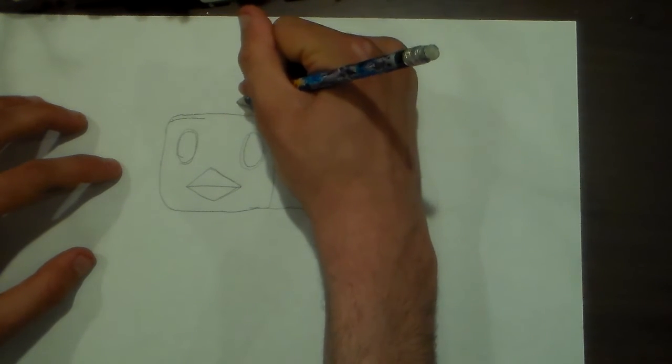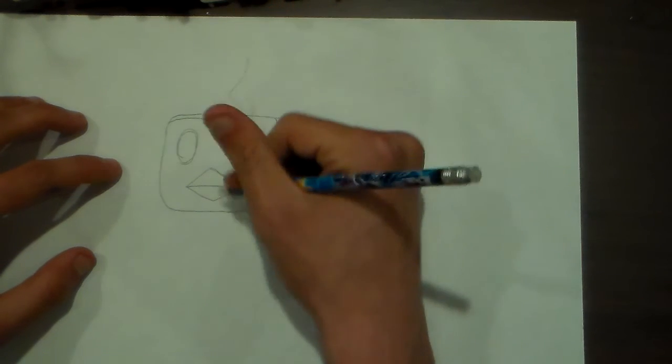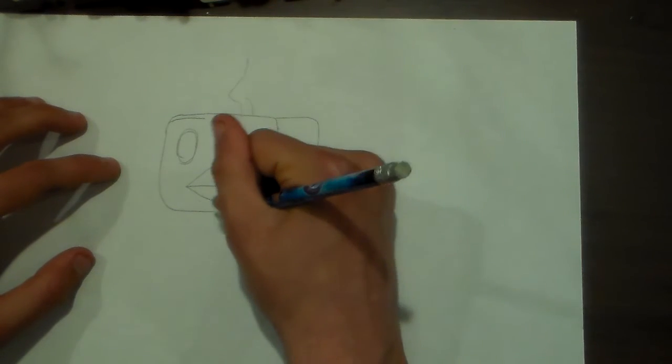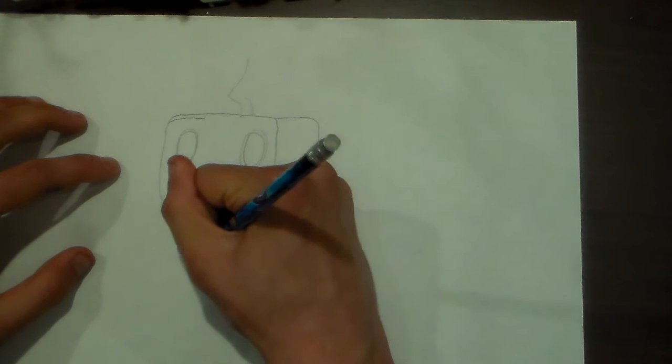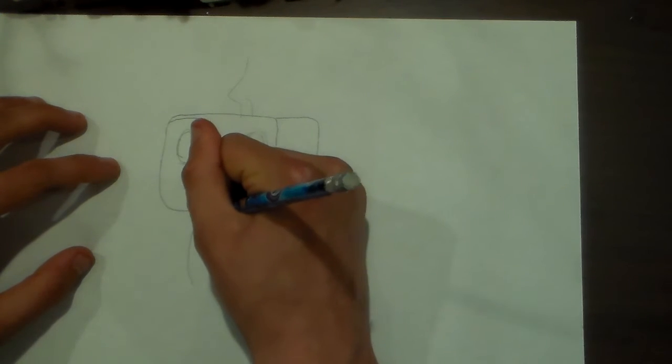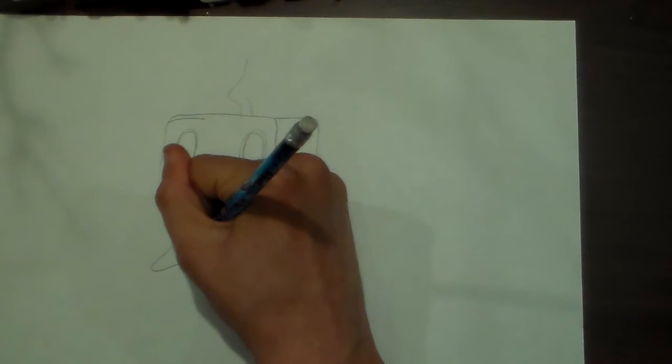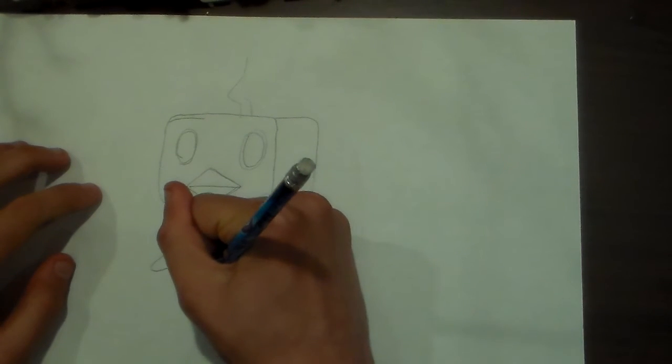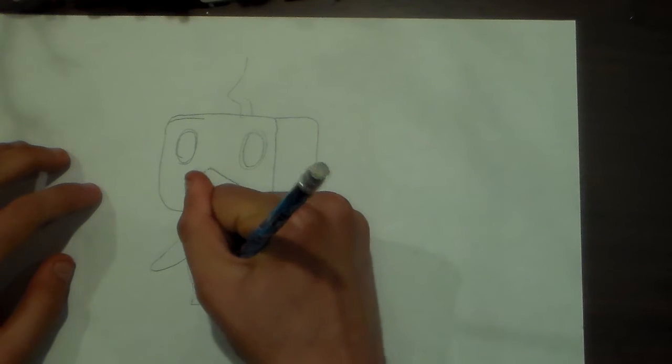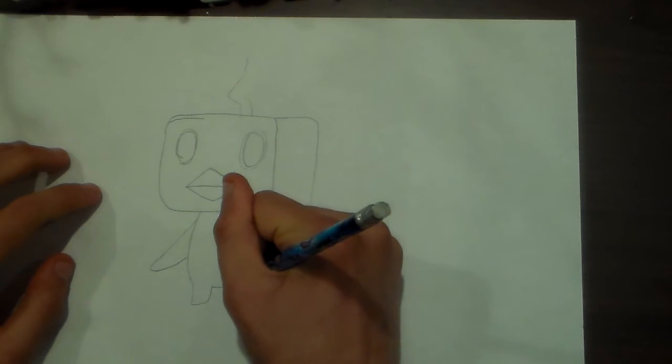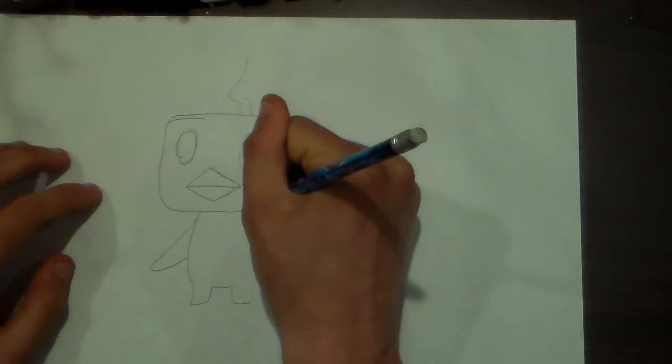Next thing you do is draw the hair. Next you draw his flipper. Next you draw his body.